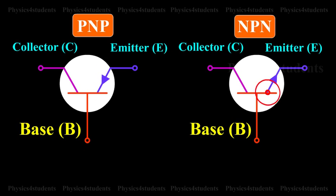NPN transistor is represented by arrow on the emitter lead pointing away from the base.